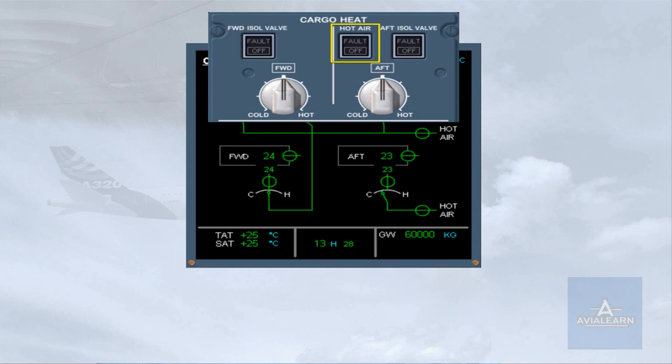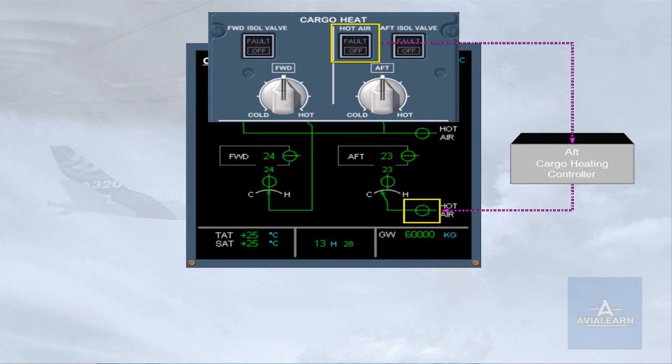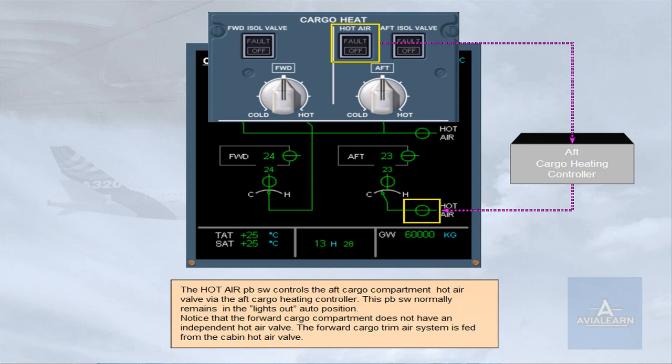The hot air push-button switch controls the aft cargo compartment hot air valve via the aft cargo heating controller. This push-button switch normally remains in the lights-out auto position. Notice that the forward cargo compartment does not have an independent hot air valve; the forward cargo trim air system is fed from the cabin hot air valve.